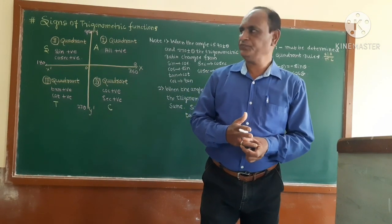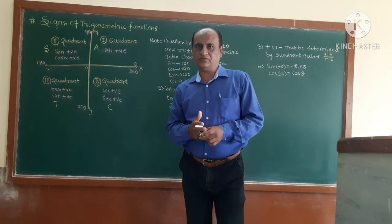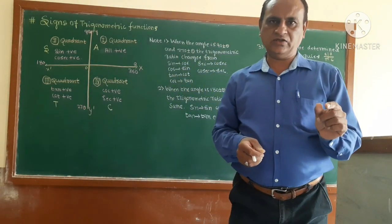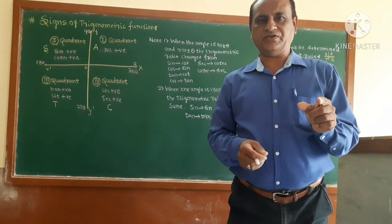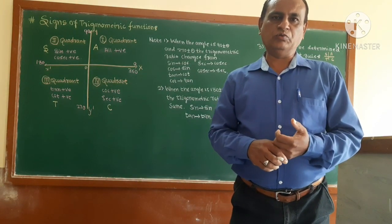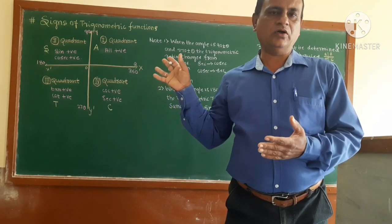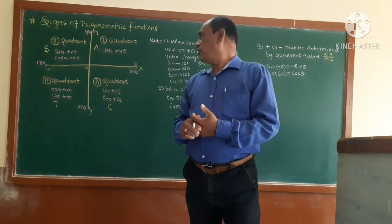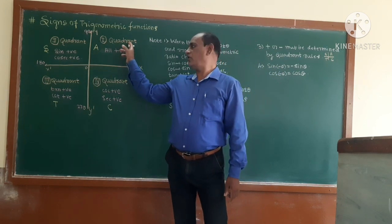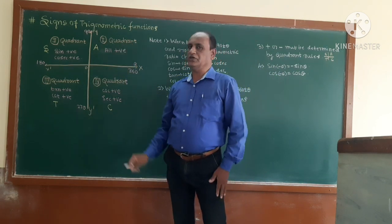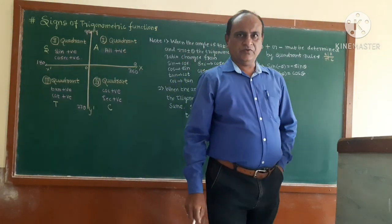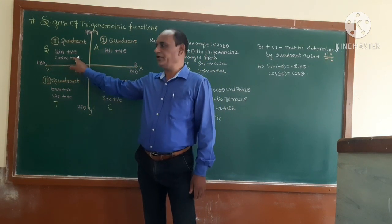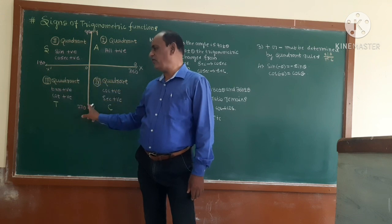Today's topic is the signs of trigonometric functions — that is, identifying plus or minus for each trigonometric function. You must know the ASTC rule. The ASTC rule starts from the first quadrant: XOY is the first quadrant, then YOX' is the second quadrant.